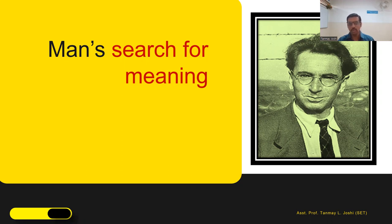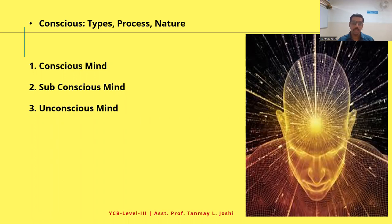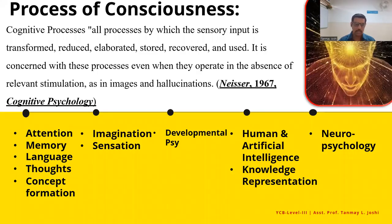Moving on to the second half of this segment — consciousness, motivation, and emotion. Consciousness, as we discussed earlier, means being aware. For Ulrich Neisser, he defined cognition as: all processes by which the sensory input is transformed, reduced, elaborated, stored, recovered, and used — even when they operate in the absence of relevant stimulation, as in images or hallucinations.